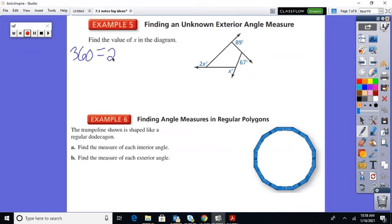So 2X plus X plus 89 plus 67. And subtract them all off of 360, then divide by 3, and you get X is 68.